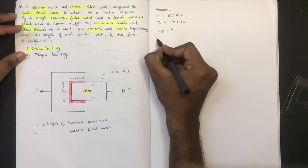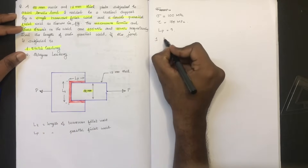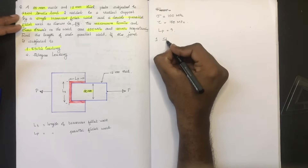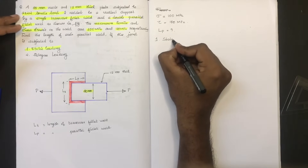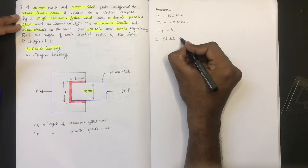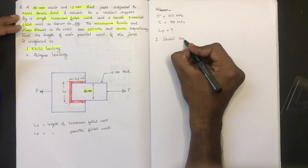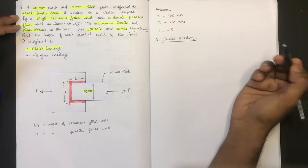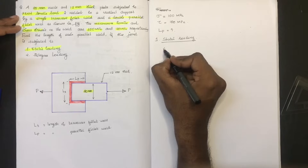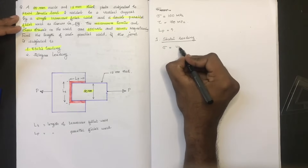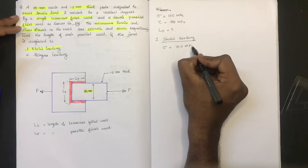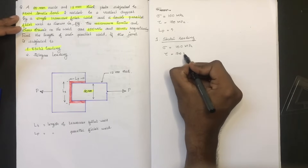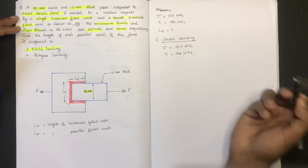First thing is static loading. Dynamic loading uses a stress concentration factor. In static loading, stress is equal to 100 MPa and tau is equal to 70 MPa.